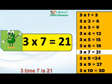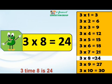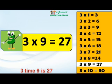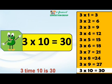3 times 7 is 21. 3 times 8 is 24. 3 times 9 is 27. 3 times 10 is 30.